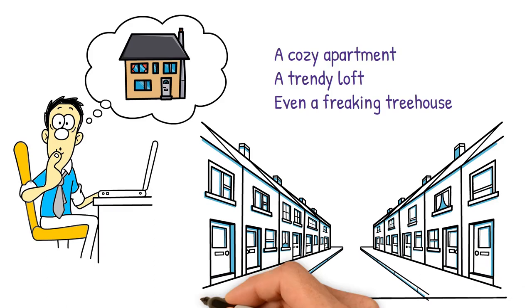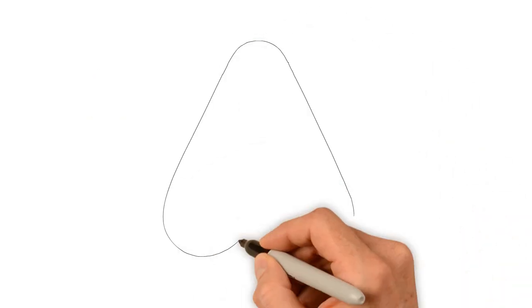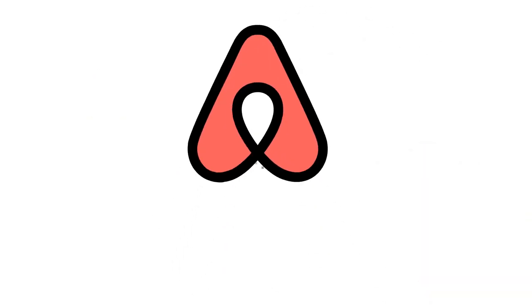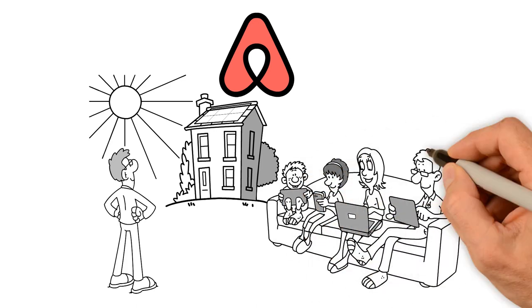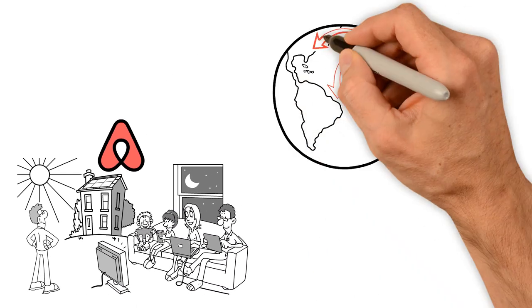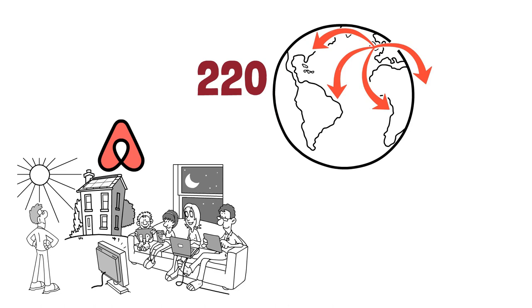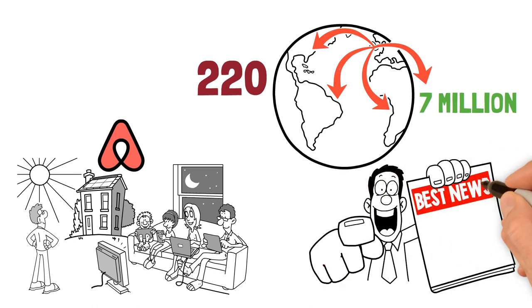But wait, there's more. Airbnb has become a global hotel competitor, taking on the big guns in the hospitality industry. From humble beginnings in San Francisco, the company has spread its wings to over 220 countries and regions, offering over 7 million listings worldwide. That's like having a different place to stay every day of the year.